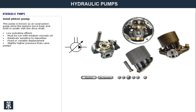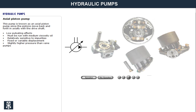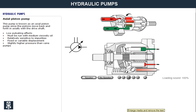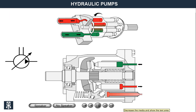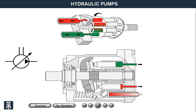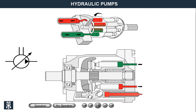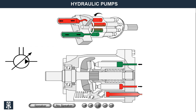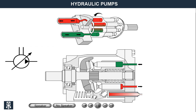This pump type is called an axial piston pump since the pistons move back and forth in parallel with the drive shaft. The pump is built up of a pump housing where a rotating shaft drives a cylinder drum with a number of cylinders and pistons. The pistons are connected with the drive shaft via a drive disc. The pumps are most often variable, meaning that the piston's stroke, and thus the pump's displacement, varies from minimum to maximum displacement.